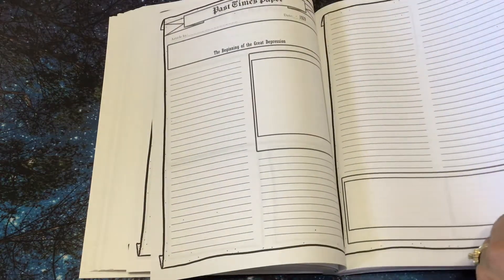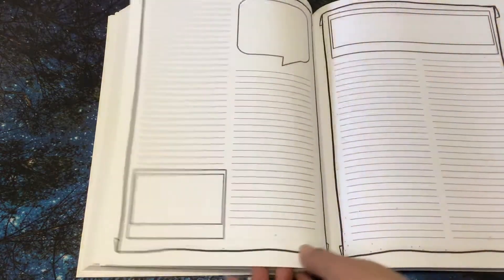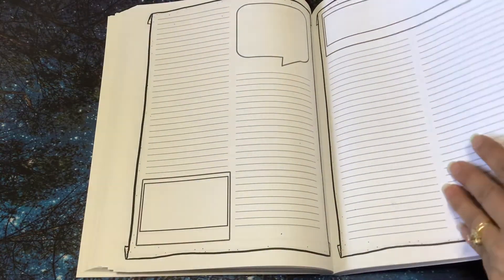So the format is the same throughout the journal, but they'll just be studying all kinds of, like this one's on the beginning of the Great Depression.